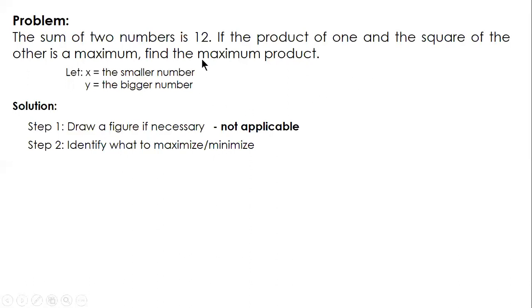Sometimes students will have a hard time identifying the quantity that will be maximized or minimized. So focus on the problem—it says maximum product, therefore what you need to maximize is the product. Step three: formulate the equation. This equation is based on the quantity that you want to maximize. For this problem, the product is: if the product of one number and the square of the other number, the equation is P equals x times y squared.